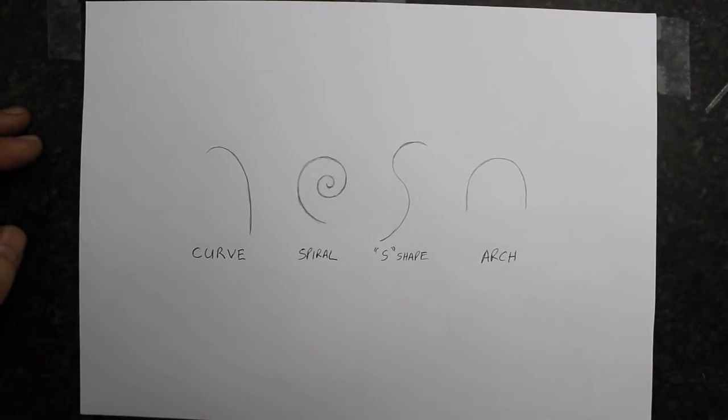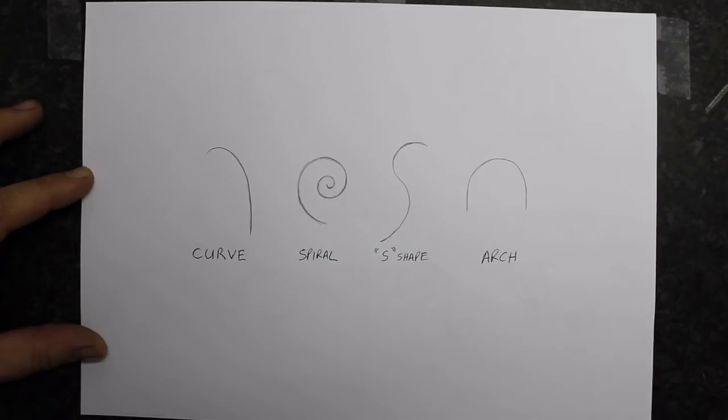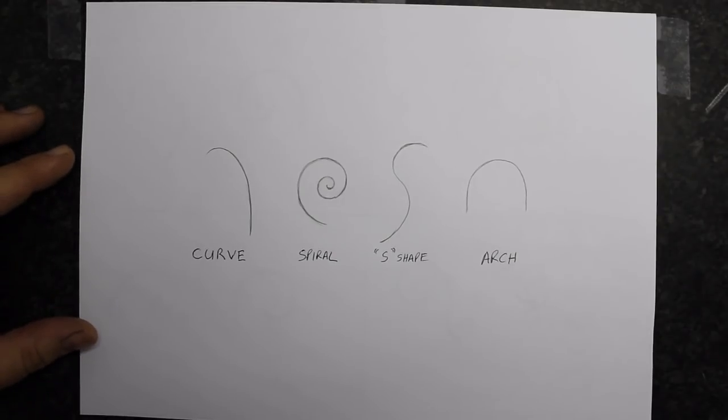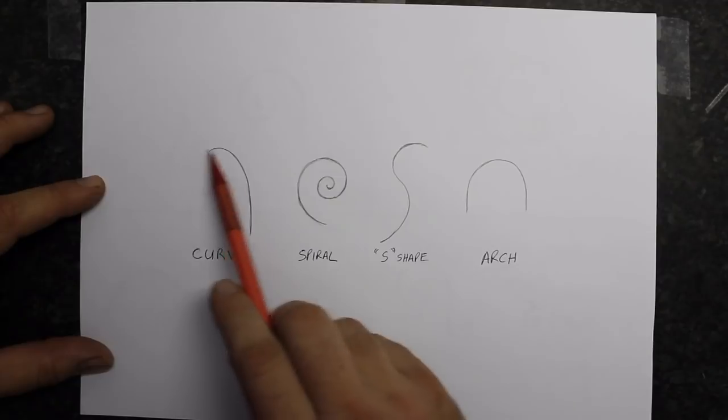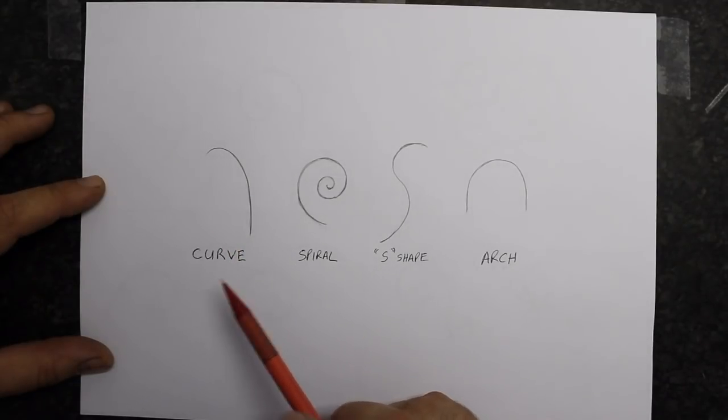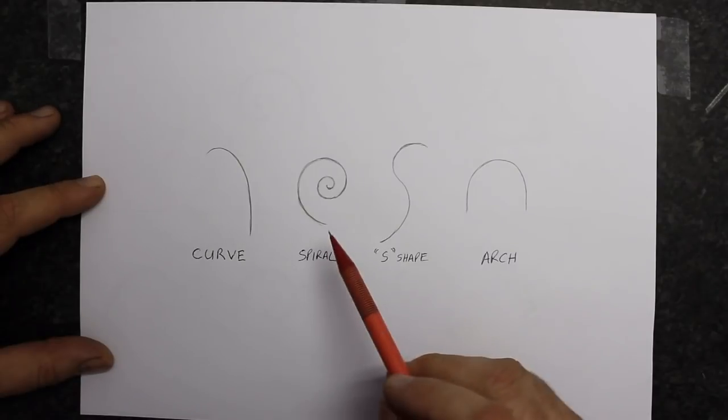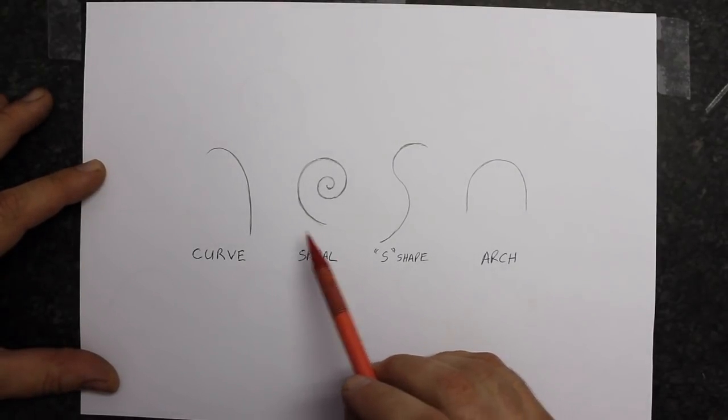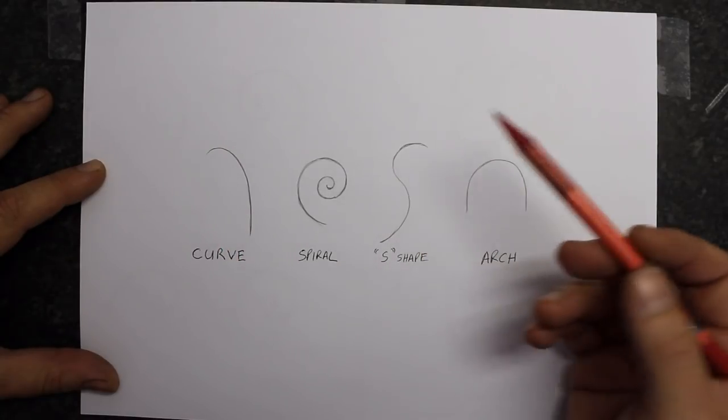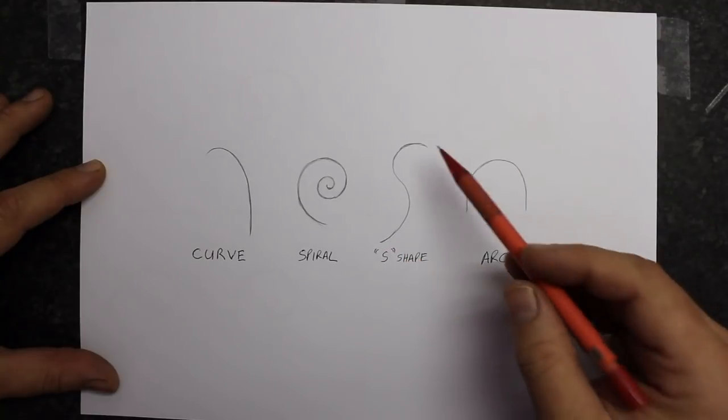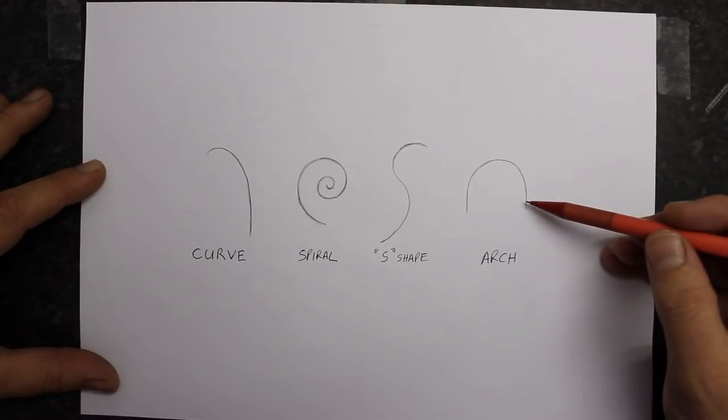Ornamental scroll design can be broken up into some very basic shapes. This is true for 99% of all scroll design. Doesn't matter how complex the design might seem, if you break it down into its components you will always see these simple basic shapes. One is a curve which might vary in gradient or curvature. The spiral, which is basically just an extension of a curve. An S-shape of varying degrees and nuances, and an arch.